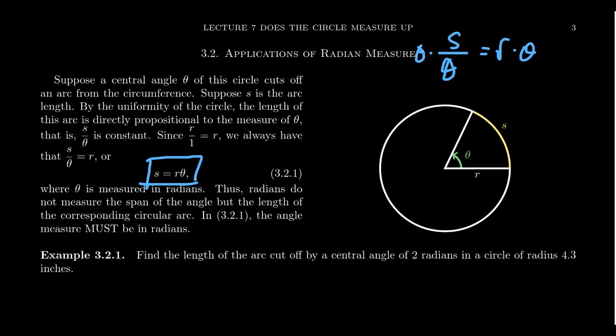Now it is important that the measure of the angle must be in radians, because this proportionality condition is the basis of why we defined radian measure to be what they were.